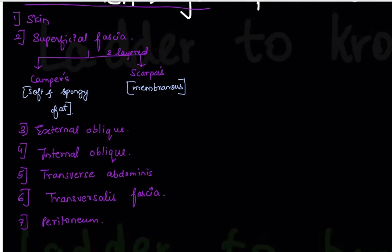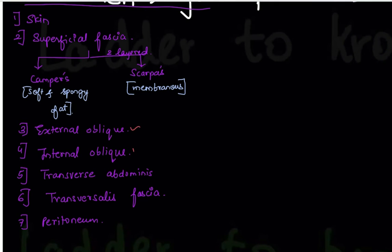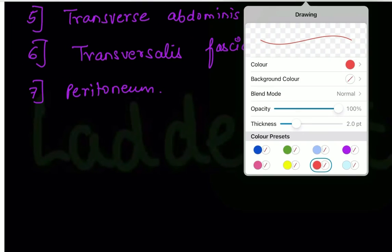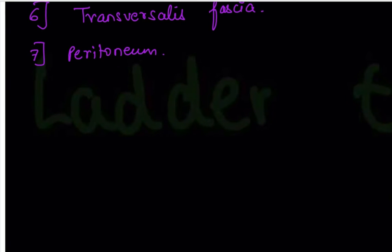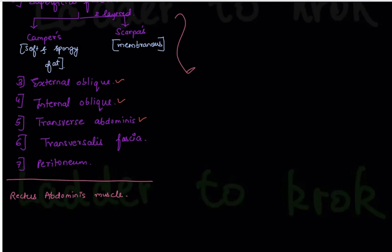Now you know all seven layers: skin, superficial fascia, external oblique, internal oblique, transverse abdominis, transversalis fascia, and peritoneum. Among these, three are muscles of the abdomen. There is also a muscle called rectus abdominis — also a muscle of our abdomen.